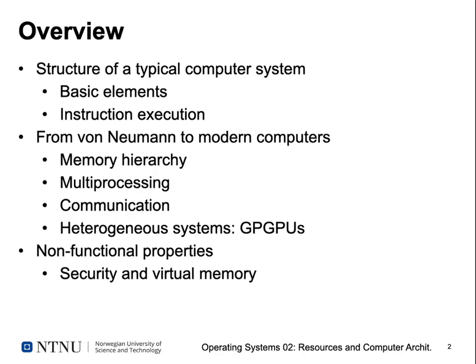Then we'll talk about more recent developments arriving at the computers we have today. We start at the old von Neumann principle and then take a look at how modern computers actually diverged from this. We have things like a memory hierarchy, multiple processes, new ways of communication, heterogeneous systems with additional components, and non-functional properties. We'll also talk about security and virtual memory.